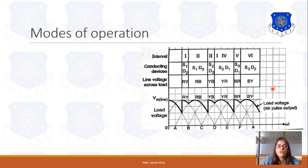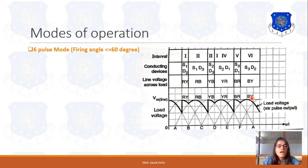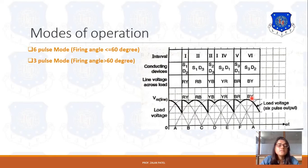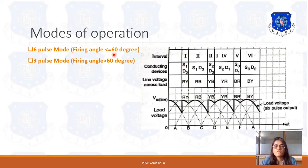There are two different modes of operation. The first is six-pulse mode, which operates when firing angle alpha is less than or equal to 60 degrees. The second is three-pulse mode, which occurs when firing angle is greater than 60 degrees. First we discuss the six-pulse mode.